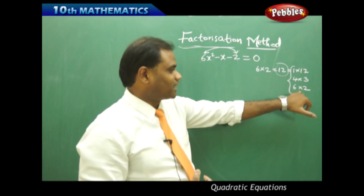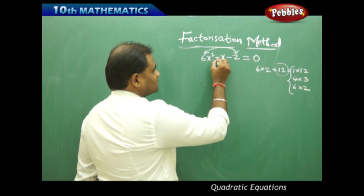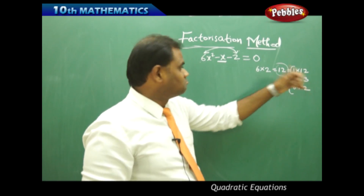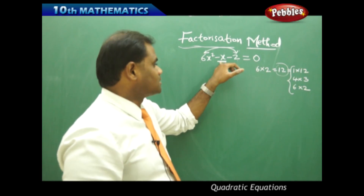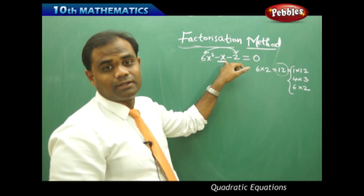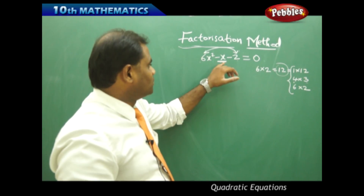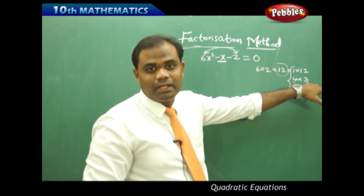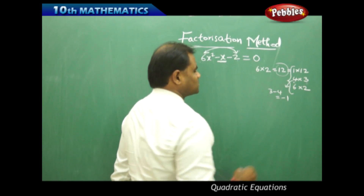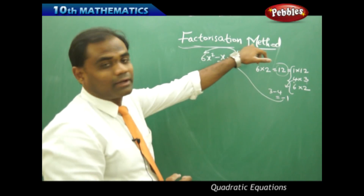Once we identify all possible factors, we try to find which pair gives the coefficient of x when added or subtracted. Here, the coefficient of x is minus 1. Adding or subtracting 1 and 12 gives 13 or 11 — doesn't work. For 6 and 2: 6 plus 2 is 8, 6 minus 2 is 4 — doesn't work. For 4 and 3: 4 plus 3 is 7 — doesn't work. But 3 minus 4 equals minus 1, which works, matching the coefficient of x. So 3 and 4 are our factors.